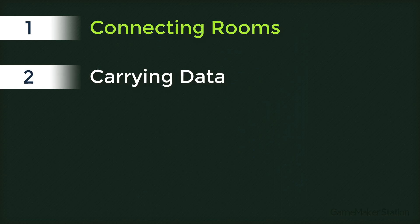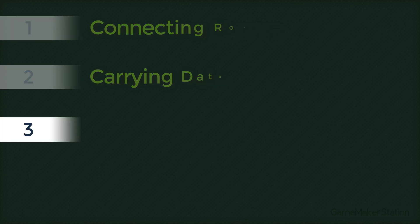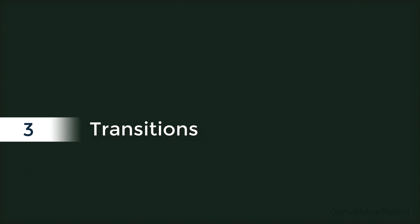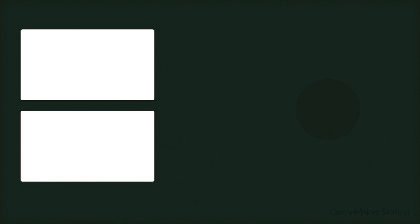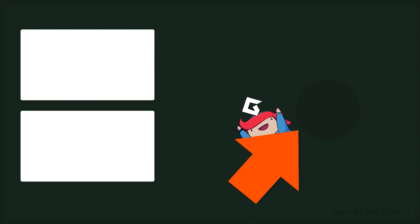Now we have solved our two problems - we connected our rooms and created a data carrier. But there is a third problem that we can now solve, which is about creating transitions between the rooms. For a simple fade transition you can go here, and for an advanced cross-fade transition you can go here. And finally, for more videos you can subscribe here. I'll see you in the next one.